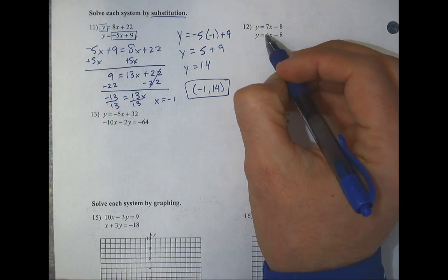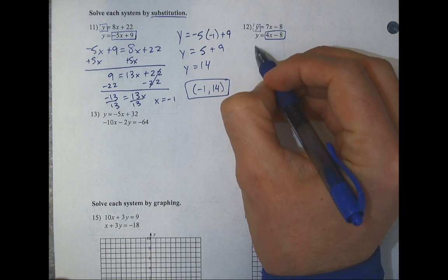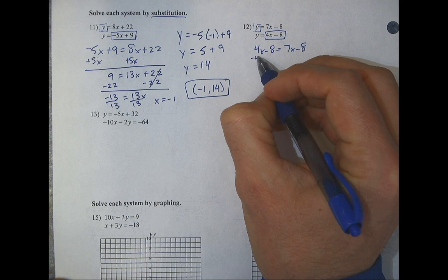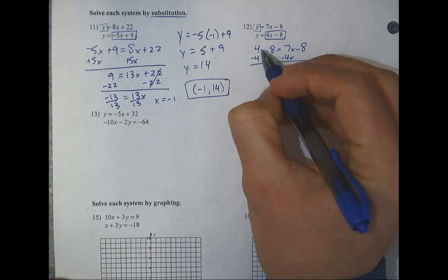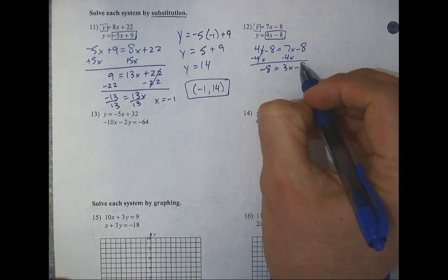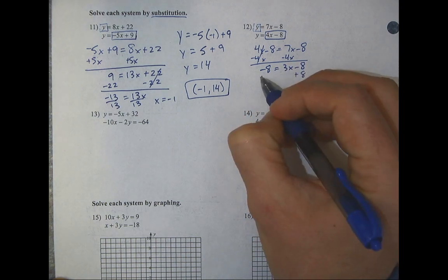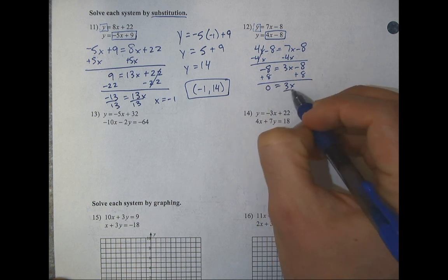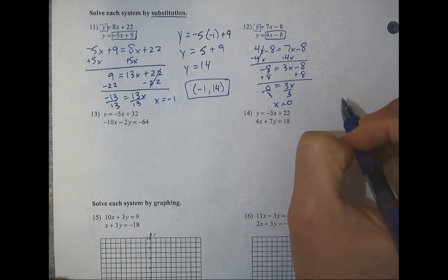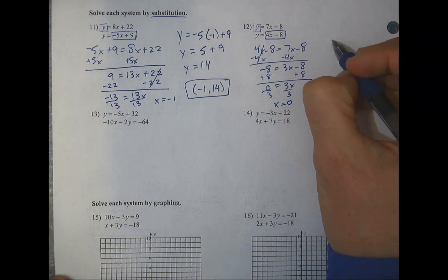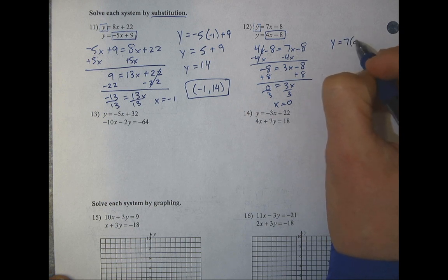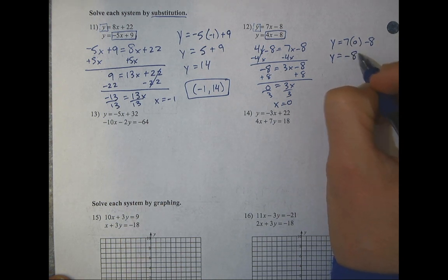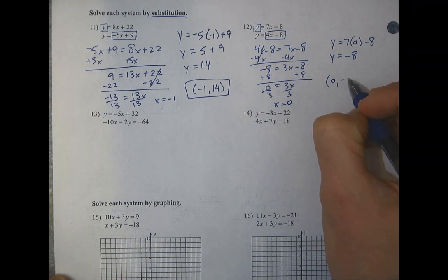Number 12 is already in y equals form, so I substitute directly. Looking at the x's, 4 is the smaller, so I eliminate it by adding 4x to both sides. This leaves 3x, and the constants cancel to zero. Dividing gives x equals 0. Plugging back in: 7 times 0 eliminates, leaving y equals negative 8. Final answer: (0, −8).